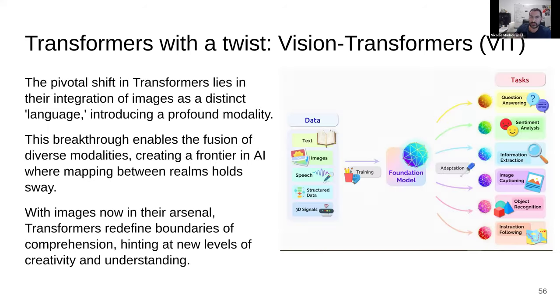What it did, this vision transformer, the people achieved is that it integrated the images as a kind of language. So you have this stream of patches and they are really a new modality. Modality like text, modality like speech, structured data, 3D signals. And you could use the same architecture for all. For anyone in the AI space, we used to have specialized models for each modality.